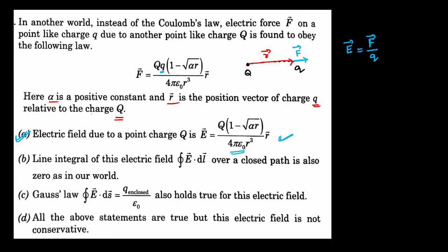The second option states that the line integral of electric field E·dl over a closed path is also zero, as in our world. We'll first verify this using the normal Coulombic interaction, then check with the given electric field.